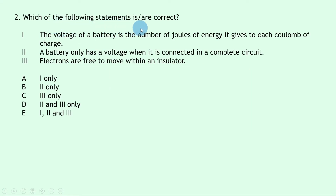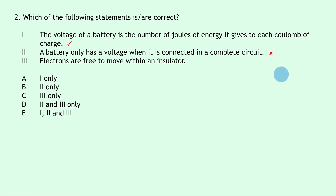Question 2 asks which statements are correct. Statement 1 says the voltage of a battery is the number of joules of energy it gives to each coulomb of charge — that is our definition of voltage, so it is true. Statement 2 says a battery only has a voltage when connected in a complete circuit — that is false because voltage is a property of the battery itself. Statement 3 says electrons are free to move within an insulator — that is false because electrons move freely within conductors, not insulators. So only statement 1 is correct: answer A.